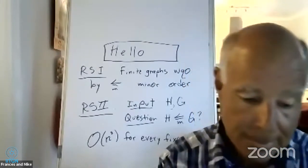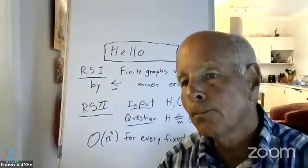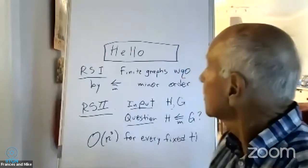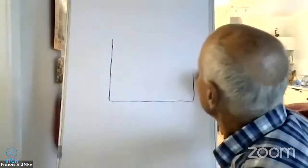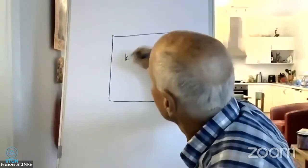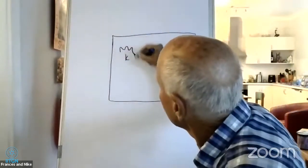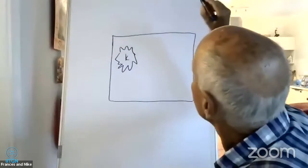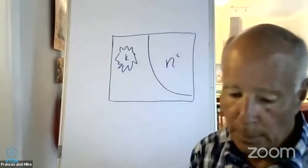What happened with NP completeness is that in came the notion of polynomial time as the good, and in came polynomial time reductions, and the gigantic discoveries that almost all the problems you're really concerned with in engineering and everywhere else are NP complete. That's the context into which parameterized complexity emerged.